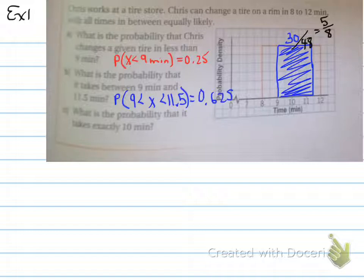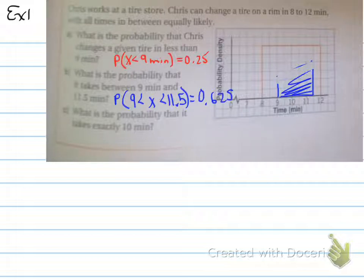Now, the last part, what is the probability that it takes exactly 10 minutes? Now, this is something you have to understand fully. So we're going to erase this block out and we're going to look at the last one. What is it saying and what does it want us to be able to do?